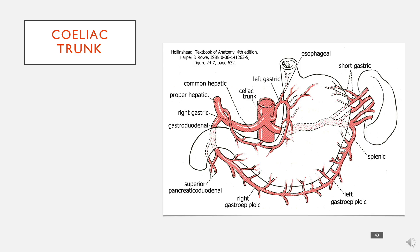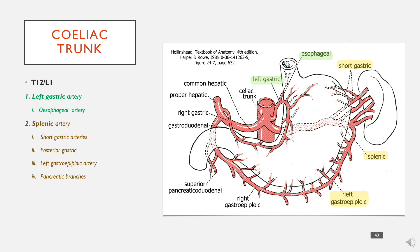The celiac trunk is the first major vessel that comes off the abdominal aorta, at about T12/L1. It has three branches. The first branch is the left gastric artery, which winds around the superior aspect of the lesser curvature of the stomach and supplies that region. It also gives off an esophageal branch which supplies the gastroesophageal junction and the lower part of the esophagus.